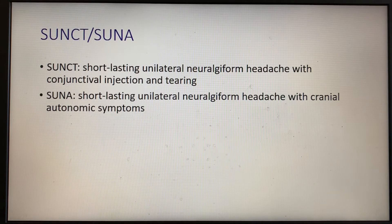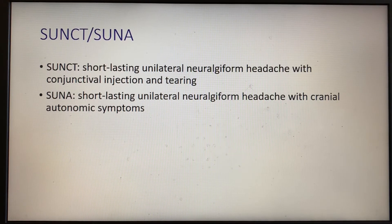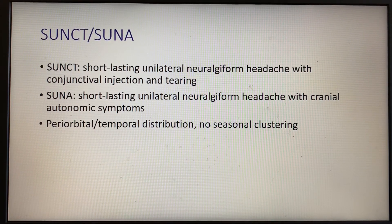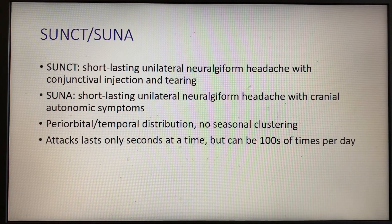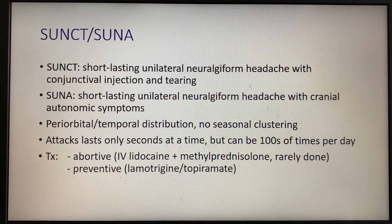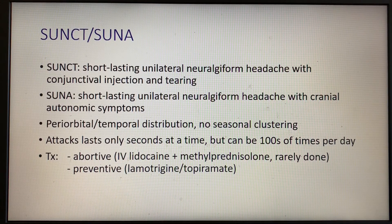There are SUNCT and SUNA. These two headaches are commonly talked about together since they tend to be very similar, with the exception that SUNCT is very specific about which autonomic symptoms you have. With all TAC headaches you should have some degree of autonomic symptoms, but SUNCT specifically needs conjunctival injection and tearing to make the diagnosis. This is a periorbital temporal distribution, but with no seasonal clustering. These attacks last only a second at a time, but they are the most frequent type of headache — attacks can occur up to hundreds of times per day, which makes this quite debilitating. Treatment with IV lidocaine and methylprednisolone is rarely used because the episodes are so short that acute abortive treatment is largely impractical. Preventive treatment is either lamotrigine or topiramate.